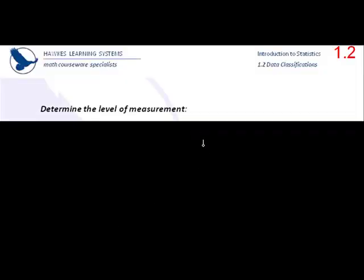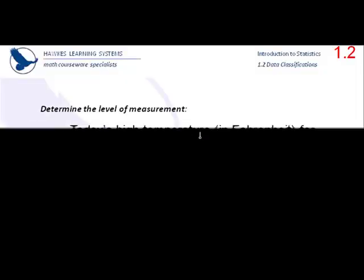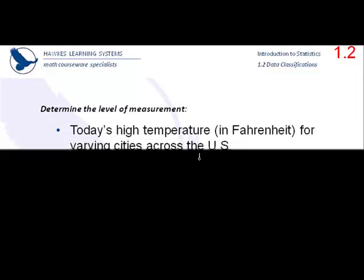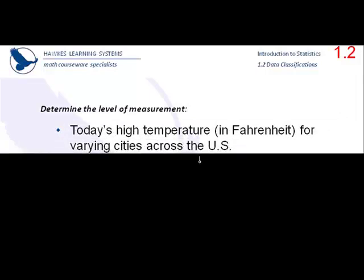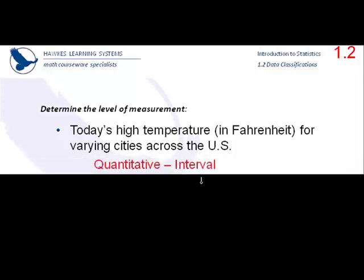It's time for you to try again. Determine the level of measurement. Today's high temperature in Fahrenheit for varying cities across the U.S. These are numbers, so it's quantitative. You can add and subtract them. So it could be interval. Could it be ratio? If it's zero degrees one day and two degrees another, is it twice as hot? No. Not ratio. Interval.